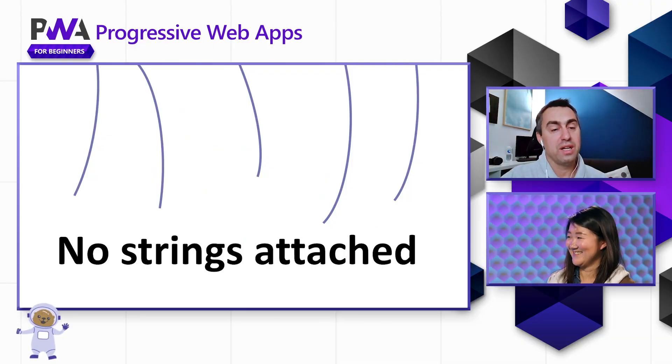Another big added value is this notion of no strings attached. If you want to try a device-specific native app, you need to install it, which may be long and sometimes a little bit slow because the app is heavy. If you're not interested, you need to uninstall it — there's more friction this way. If you want to try a PWA instead, you just go to it in your web browser by typing the URL or looking for it in a search engine and you can try it right away. If you're interested, then you can install it so that you have the little icon on your home screen or in taskbar.